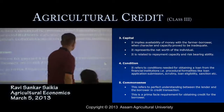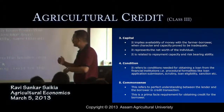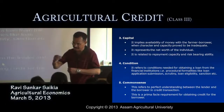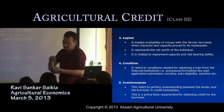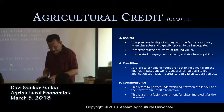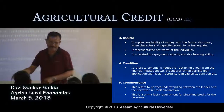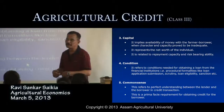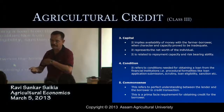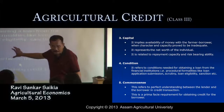The fifth C is common sense. This refers to the perfect understanding between the lender and the borrower in a credit transaction. There will be better mutual understanding — the banker looks at conditions preferable to the borrower, and the borrower has faith in the banking organization, believing the bank will help when needed.